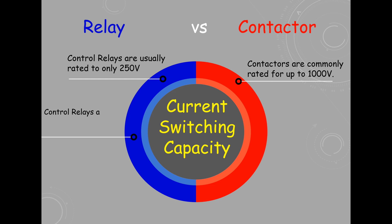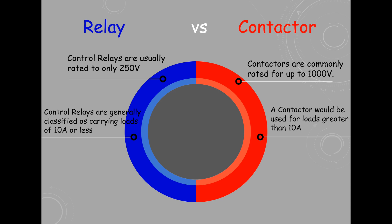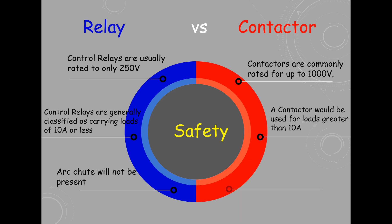Relays are generally classified as carrying loads of 10A or less, while a contactor would be used for loads greater than 10A. The arc suppression system is not present in a relay for safety, but the arc suppression system and spring must be present in a contactor for safety.